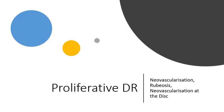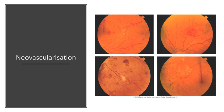The next classification is proliferative diabetic retinopathy, where you see neovascularization, rubiosis, and neovascularization at the disc. This affects about 5 to 10% of diabetics, with type 1 diabetics most at risk — 60% of them having proliferative DR after 30 years of disease. The primary feature is neovascularization, so when a patient has proliferative diabetic retinopathy, they most likely also have signs of neovascularization.